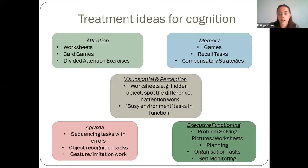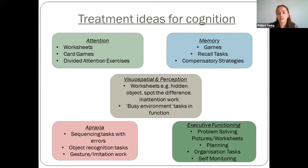For visual spatial and perception, worksheets like hidden object worksheets, star cancellation, and line bisection can be sent by email. You can also orchestrate a busy environment in a functional task to see if the patient can locate objects. Most of these can be done with a carer, liaising with them first to set up the session. For upper limb, we've asked patients to complete functional tasks observed via video — applying face cream, simulating brushing teeth, curling hair, handwriting, and cooking tasks — giving specific upper limb exercises in between.